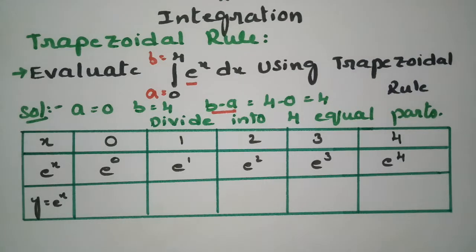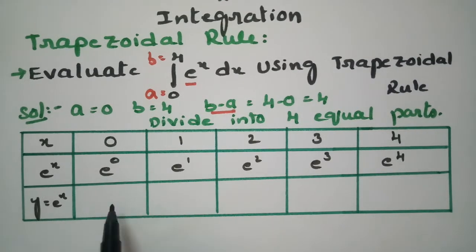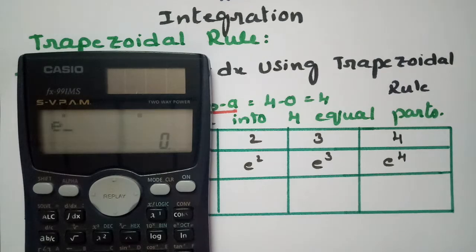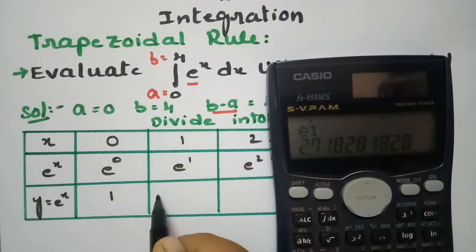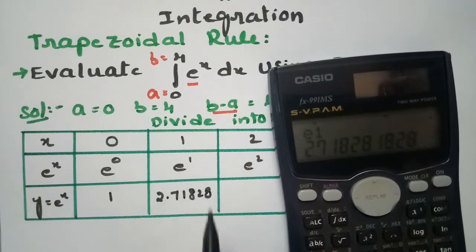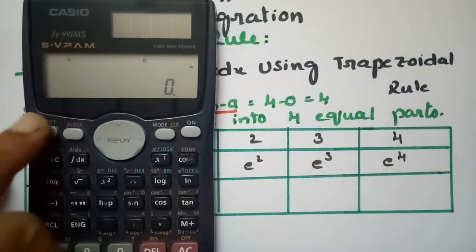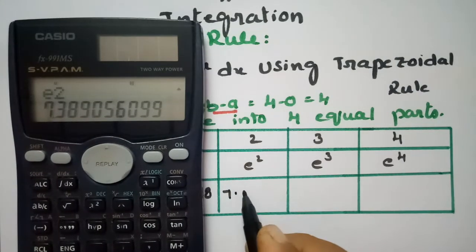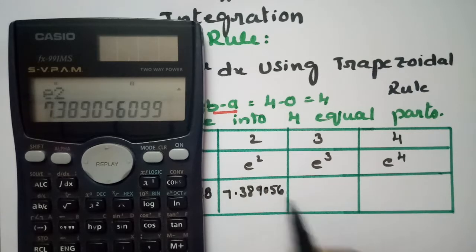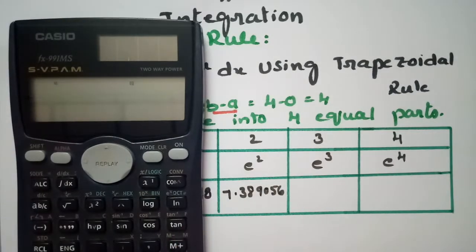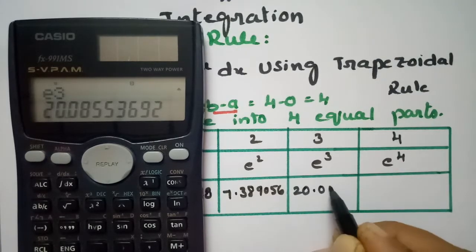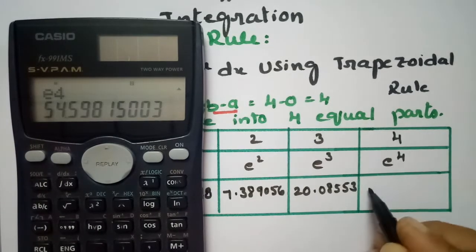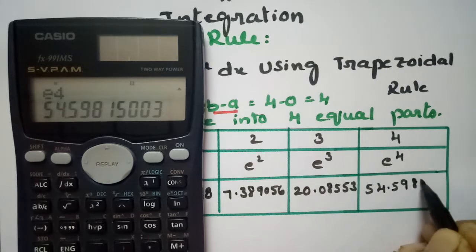Now we have to calculate all the values of y. Anything to the power 0 is 1. e^1 is 2.71828. e^2 is 7.389056. e^3 is 20.08553. And e^4 is 54.598150.